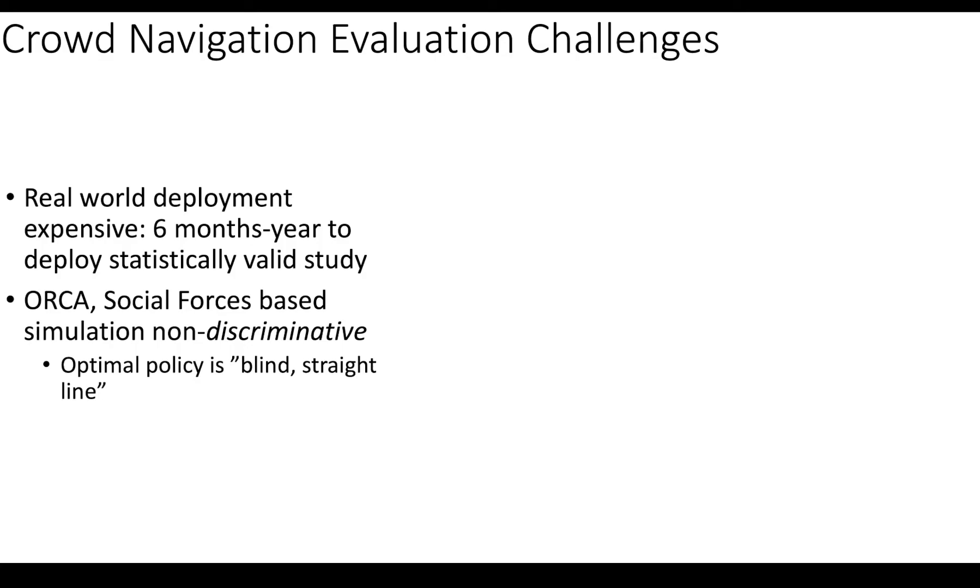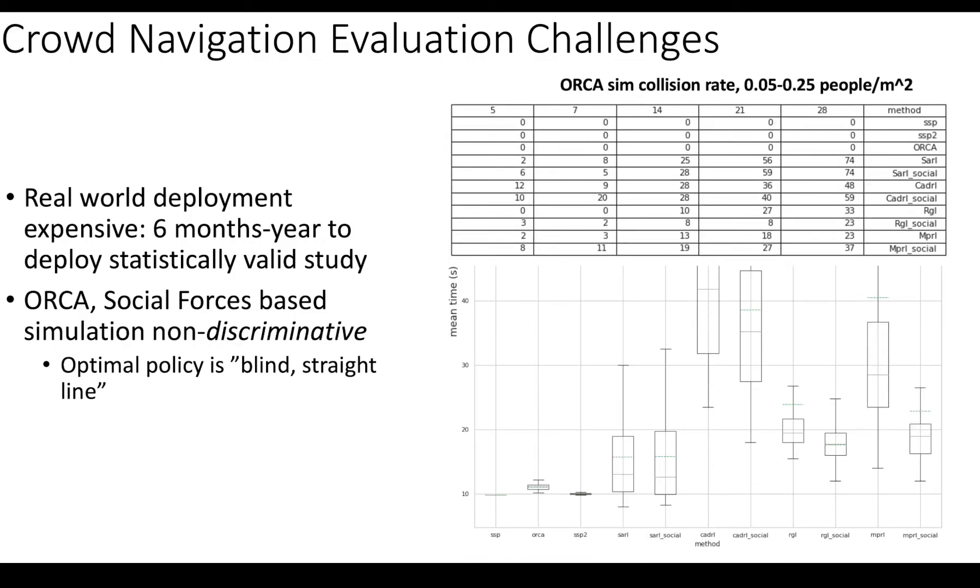And simulators, the state-of-the-art simulators, for instance, social forces are essentially non-discriminative in the sense that the optimal policy is blind straight line movement. So the optimal policy is just to go in a straight line and not slow down for anybody. And we can see this here in our chart. So in the table, we have the number of collisions and further to the right is higher density. And SSP2 is what we're calling our blind plan. And you see there's zero collisions, even at high densities.